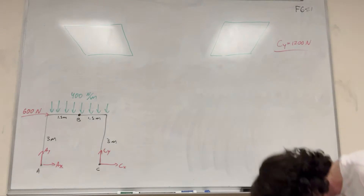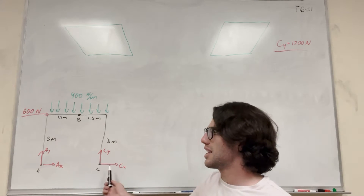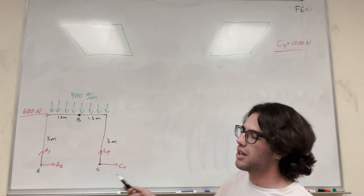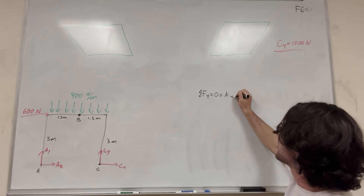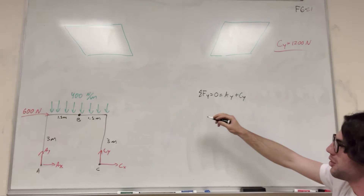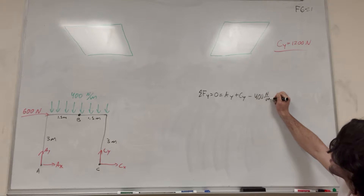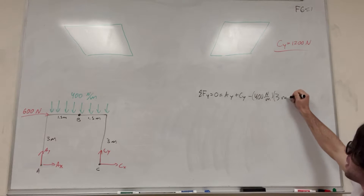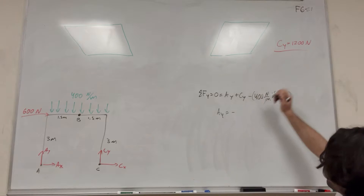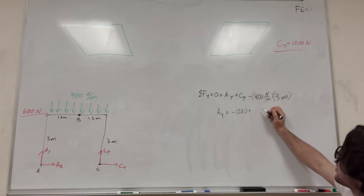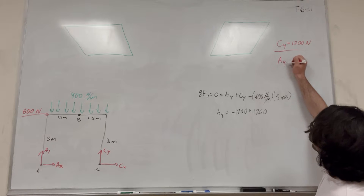Now let's find the sum of forces in the Y direction. Since we found C of Y, we can find A of Y, because we know there are only two forces in Y. Sum of forces in the Y direction equals zero: A of Y plus C of Y minus 400 Newtons per meter times three meters equals zero. Plugging in, A of Y equals negative 1,200 plus 1,200, so A of Y is equal to zero.